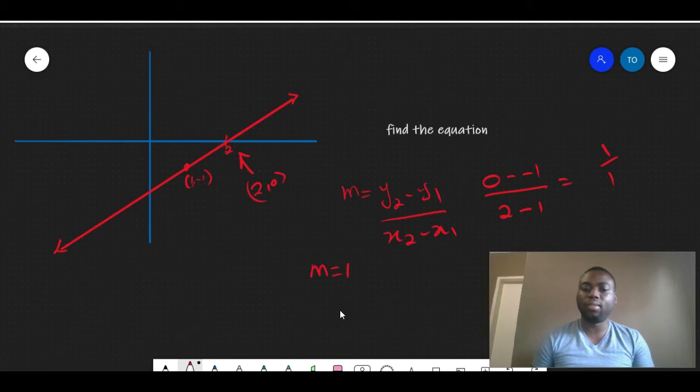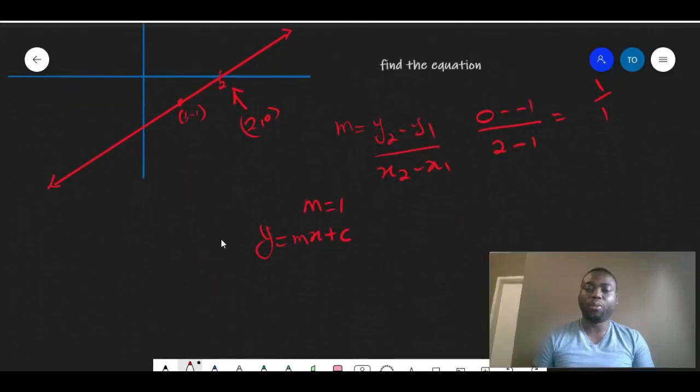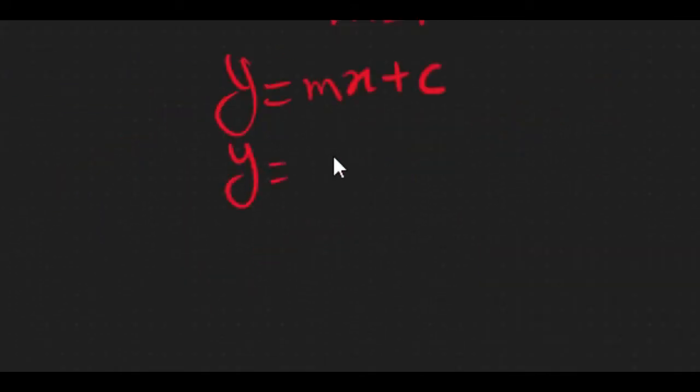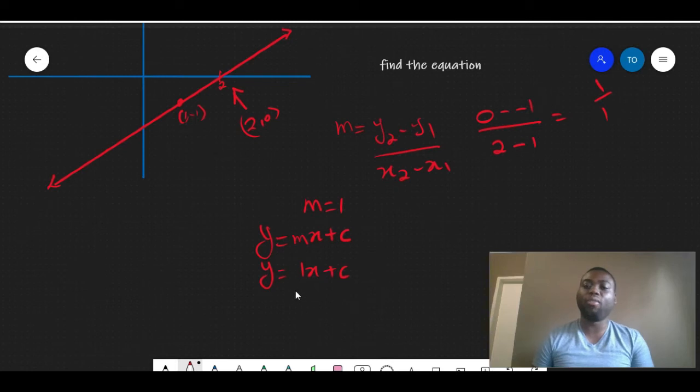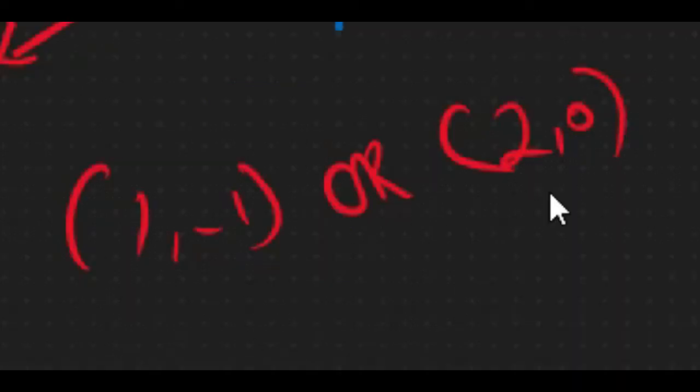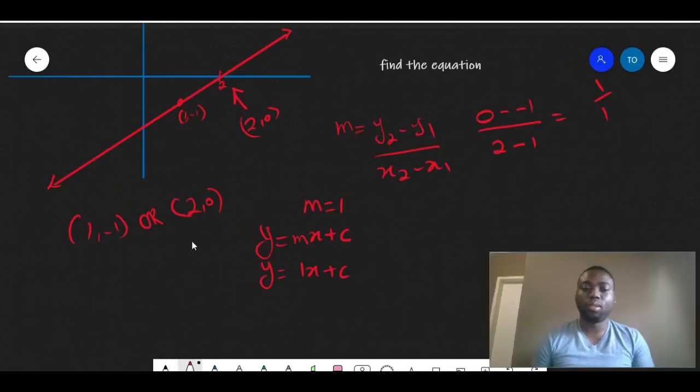To find the equation of our line, which has to look like this, what we'll do is that we'll first of all substitute our m. Then we have a choice. It doesn't matter which one we choose. So let's say we choose (2, 0) and put it into this equation.